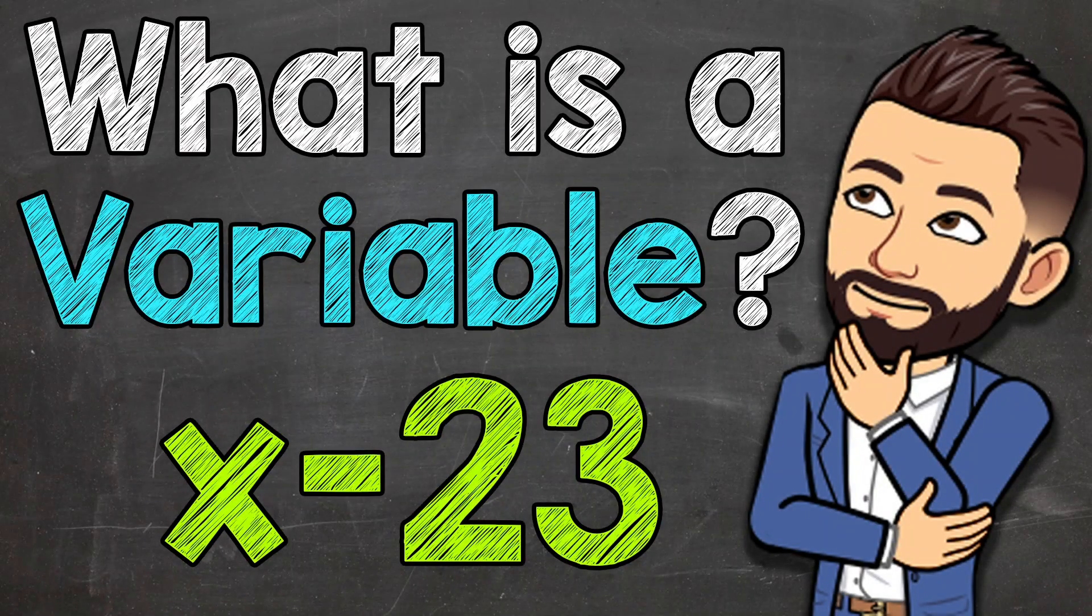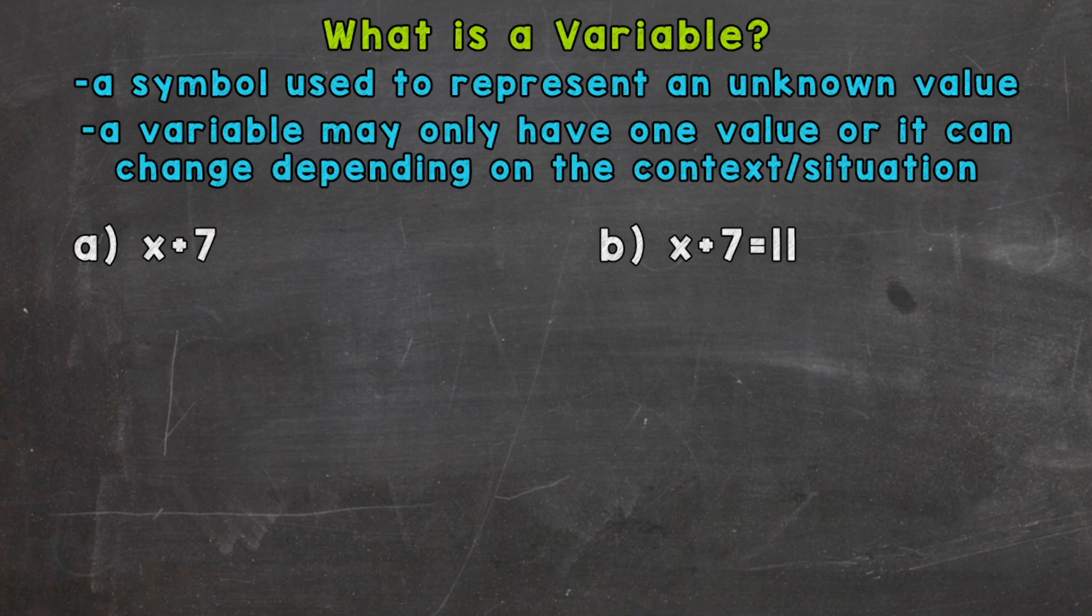Welcome to Math with Mr. J. In this video, I'm going to cover what is a variable. A variable is a symbol used to represent an unknown value, and usually a variable is represented by a letter.